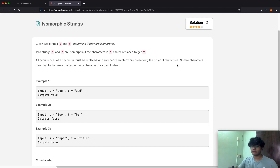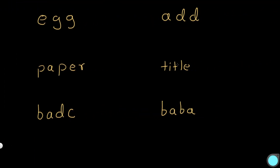Let's look at a few examples to better understand what this is saying. We have the string 'egg' as s and 'add' as t. To see whether it's isomorphic, let's see whether we can replace the letters in s to make it equivalent to t. We could go to e and make all the e's in string s equal to a, so we would have 'a g g' since all the e's become a's, maintaining the order. But 'agg' is not equal to 'add'.